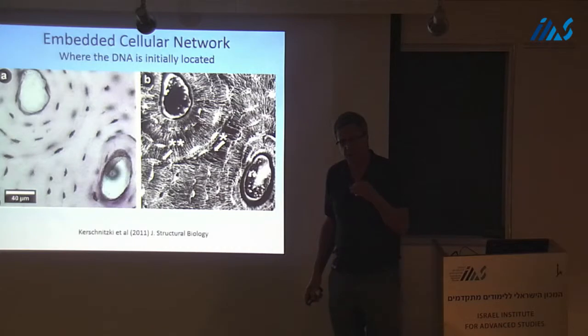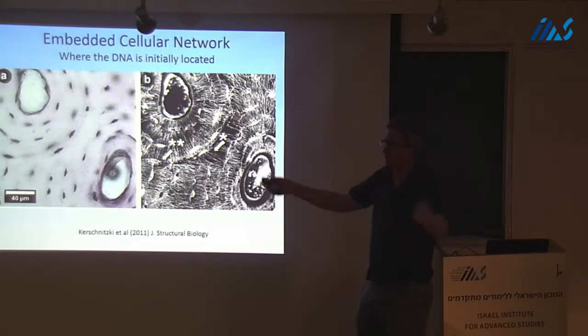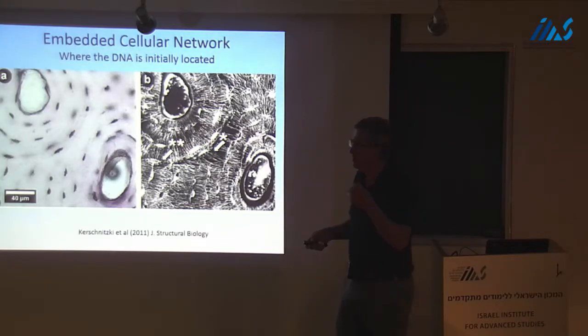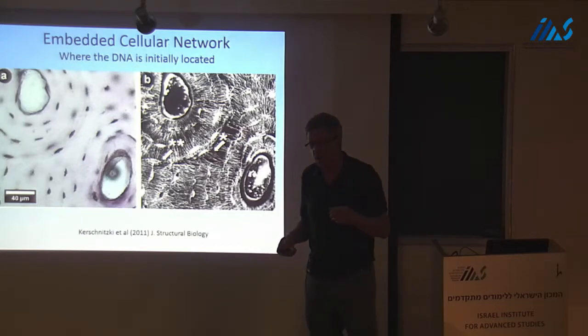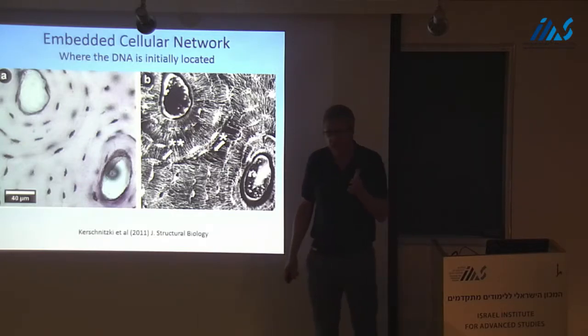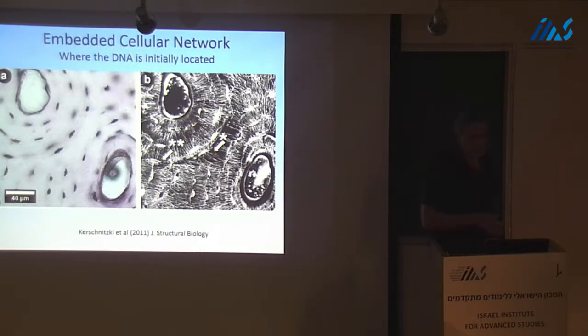However, what about the embedded cellular network inside bone? And these are the osteocyte lacunae. This is where the cells are, and this is where the DNA is initially located. So we have no other reason to believe that DNA is infiltrating from any other tissue at this stage. But these osteocyte lacunae send out myriads of canaliculi. And a colleague of ours, Peter Fratzel, in Berlin, has said that there is not more than one or two microns distance in a bone between neighboring canaliculi. So these things are pervasive.